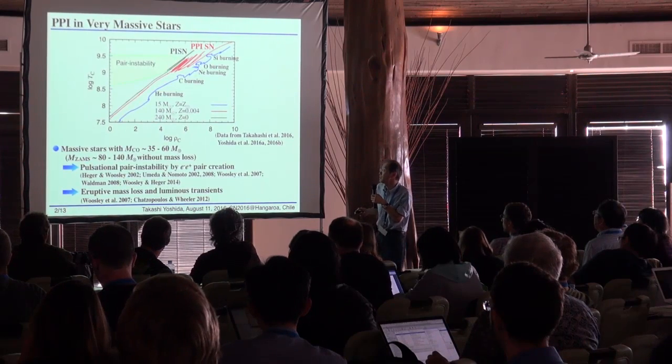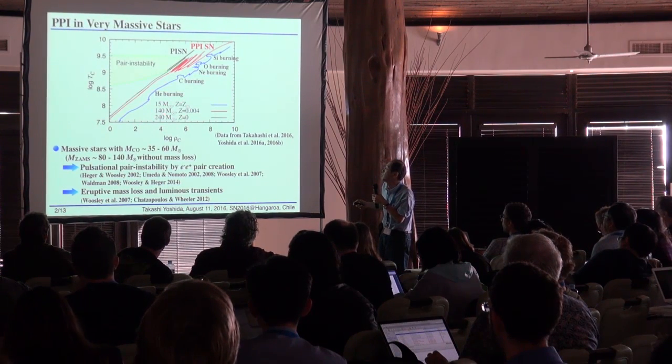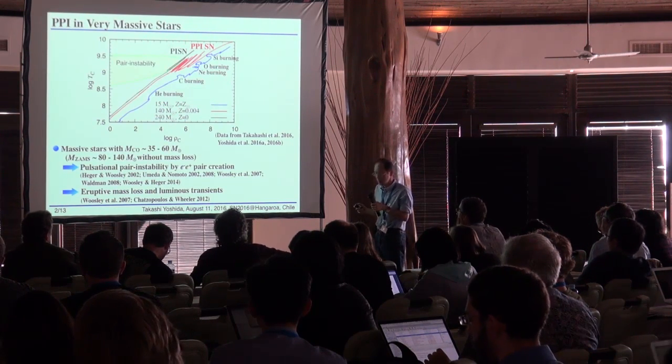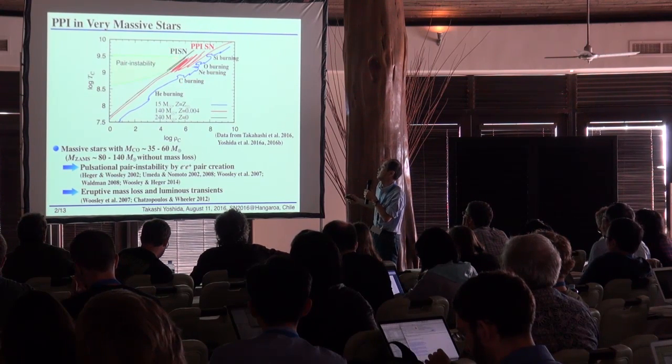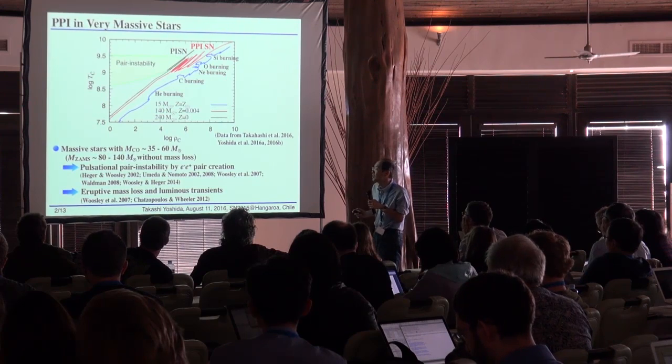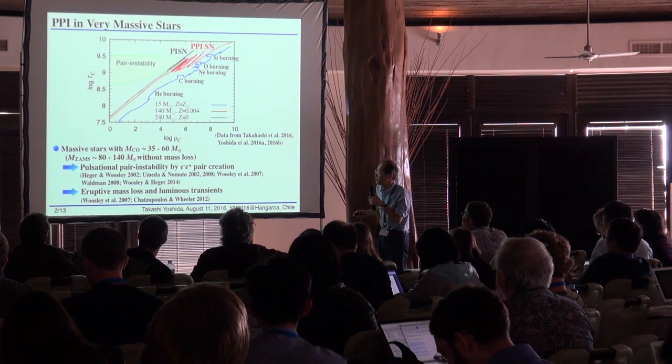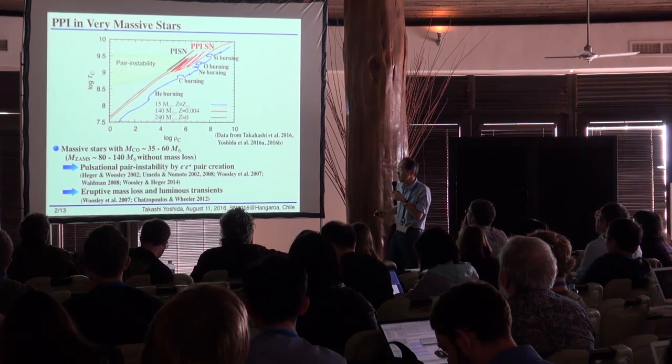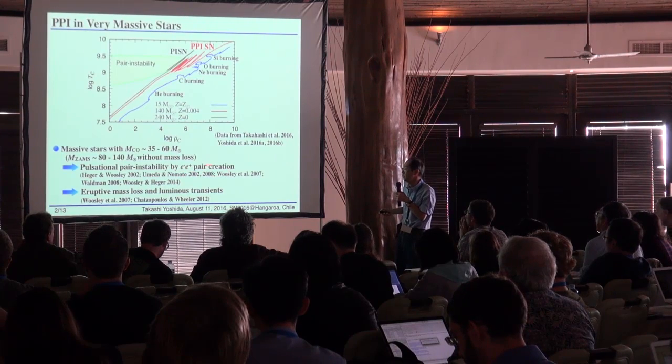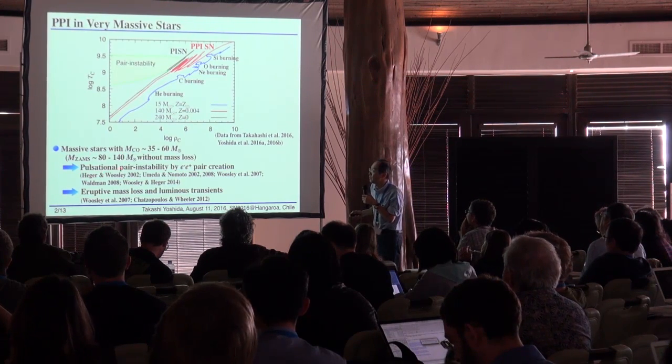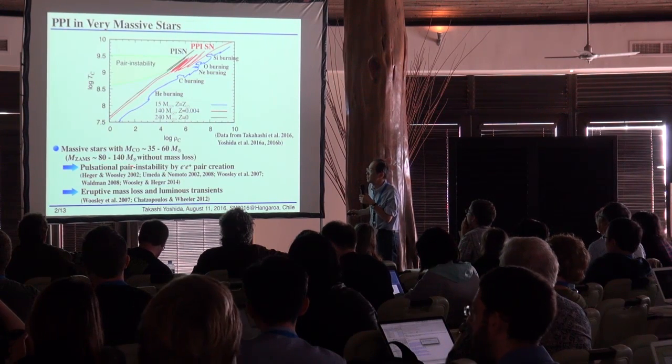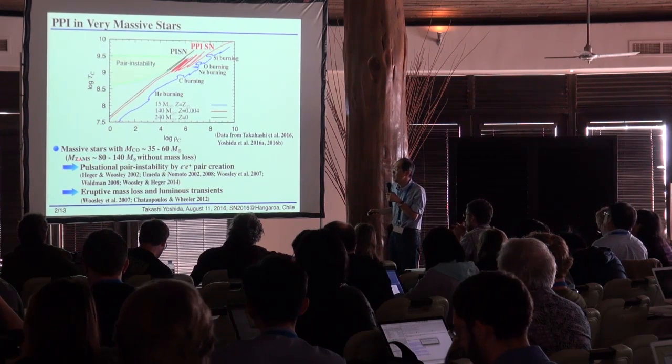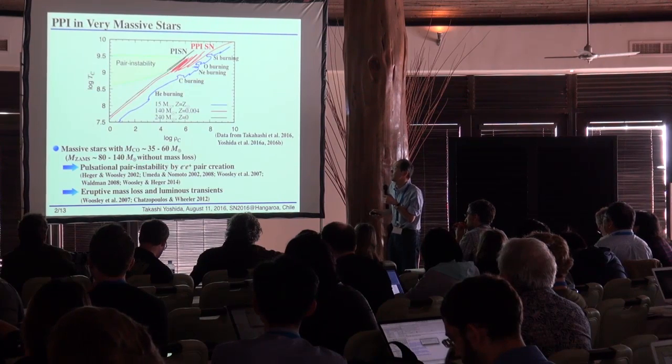Alex's talk covered mainly the evolution of normal mass stars. My topic is between the mass range of stars with CO core mass about 35 to 60 solar mass that possess pair instability by electron-positron pair creation. The corresponding initial masses are around this range.